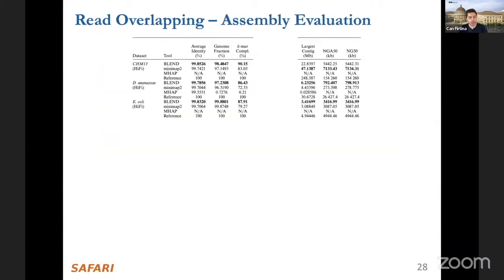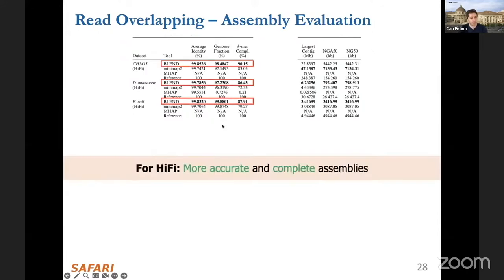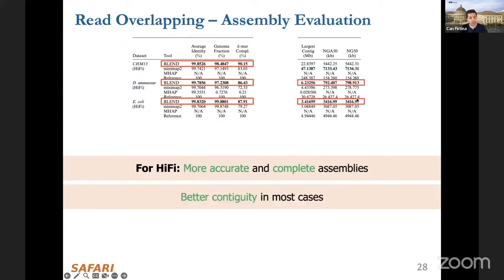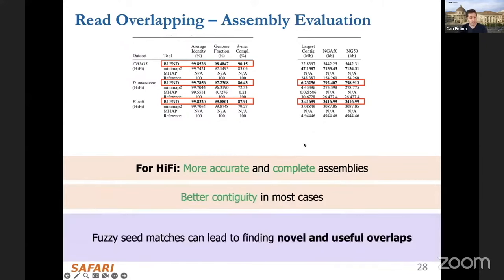For assembly evaluation, we generated assemblies after finding read overlaps using each tool. Evaluating on HiFi reads using metrics such as average identity, genome fraction, k-mer completeness, largest contig, NGA, and NG50, we see that BLEND generates more accurate and complete assemblies by looking at these particular values. It also leads to better contiguity in most cases, because fuzzy seed matches can lead to finding novel and useful overlaps.